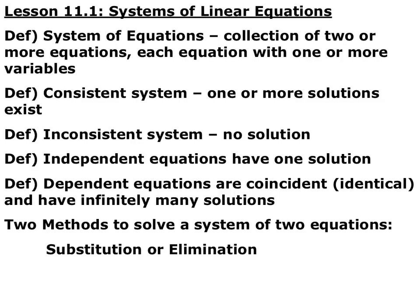A system of equations is a collection of one or more equations with at least one variable. A consistent system has at least one solution. An inconsistent system has no solution — that would be like a set of parallel lines that never intersect. Independent equations have one solution, meaning they cross in one place — you have one point. Dependent solutions are identical or coincident, so that would be like the exact same lines.